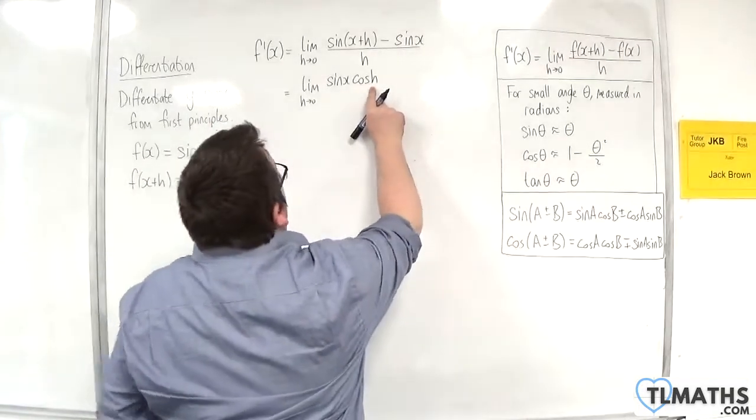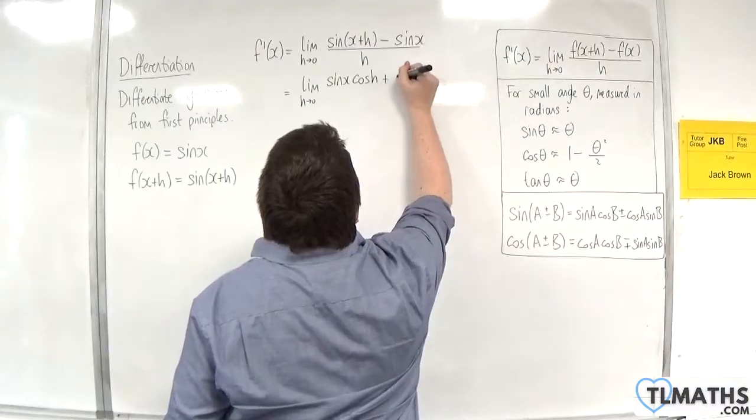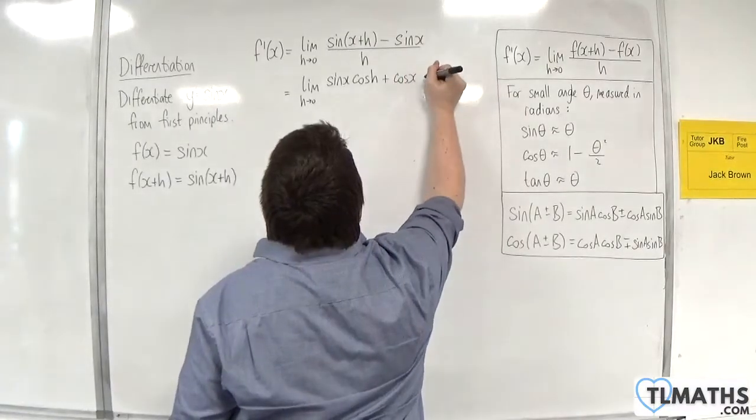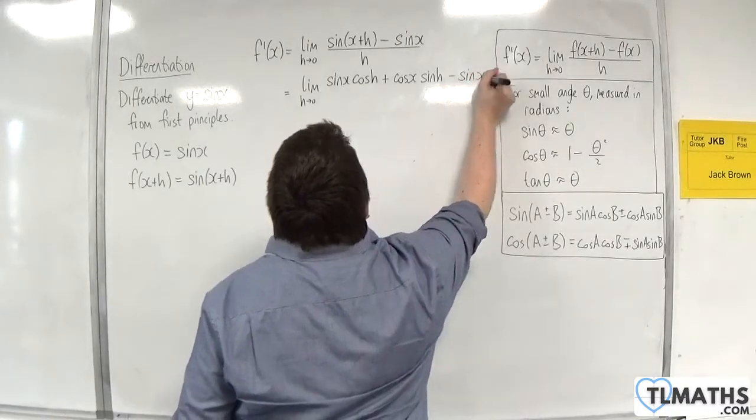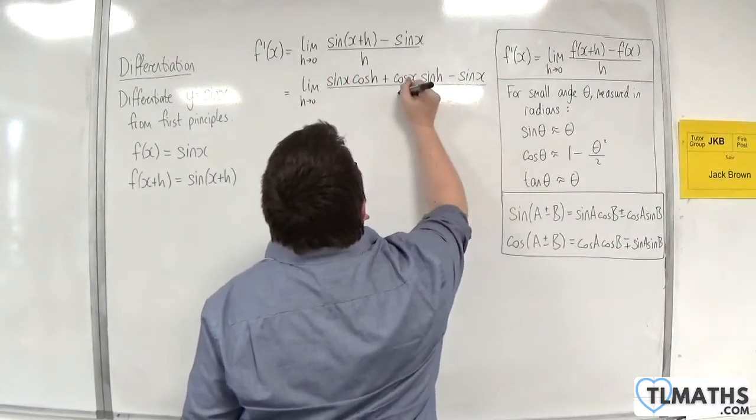So this is cos x. So we're going to have plus cos x sin of h, and we have the take away sin x on the end, over h.